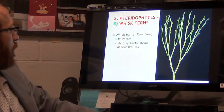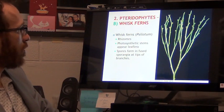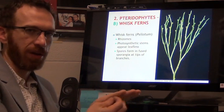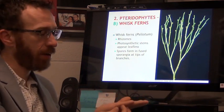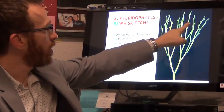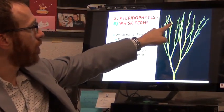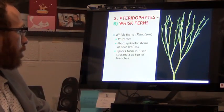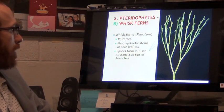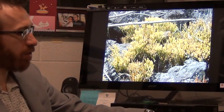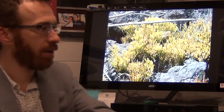In ferns we have the sporangia on the undersides of the fern fronds. Here in whisk ferns, our sporangia are at the tips. See the sporangia on the intersection of some branches? Those are sporangia right there. That's where our spores come from. This is what whisk ferns look like in nature.